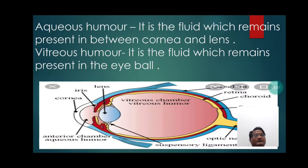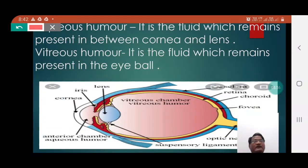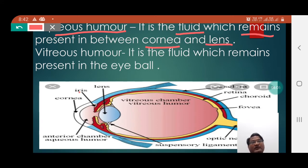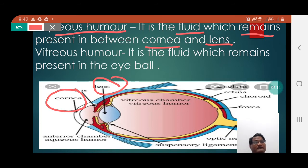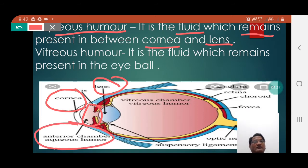Aqueous humor. It is the fluid which remains present in between the cornea and the lens. Here you can notice the cornea and the lens. In between the cornea and lens, there remains present a particular type of fluid, and this fluid is called aqueous humor.